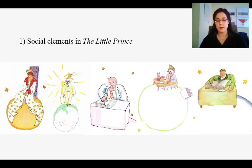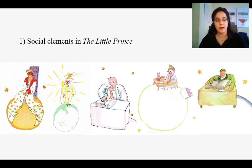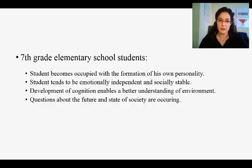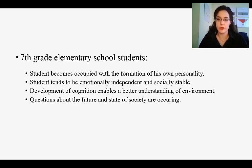Art teaching strives to eliminate this by setting the goal to combine values of different origins, to develop critical and creative thinking, and to develop sensitivity to aesthetic qualities. For these reasons, The Little Prince can be a mediator between the human and the artistic. The book's social aspects are multilayered, and the ways of decoding them depend on the age of the students and their ability to receive layered messages. The Little Prince is included in the list of literature for 7th grade elementary school students — a period in which students become occupied with forming their own personality, tend to be emotionally independent and socially stable, while rapid cognitive development enables a better understanding of their environment.